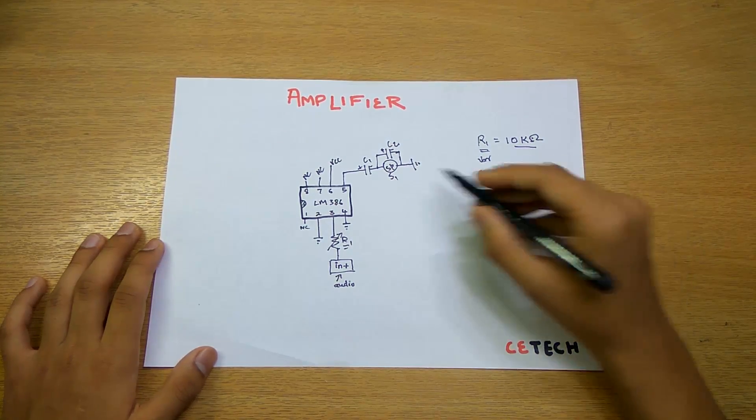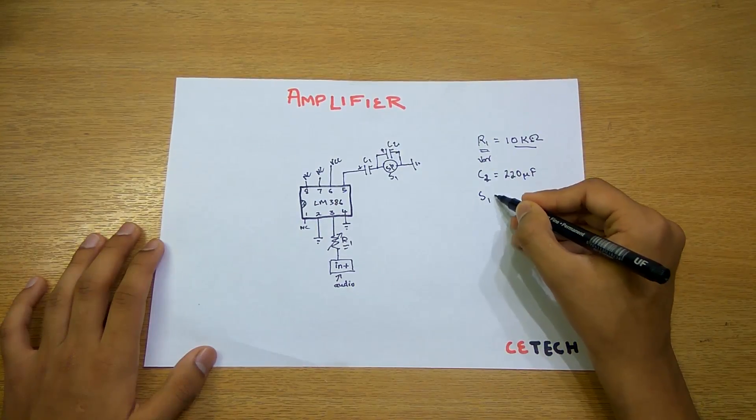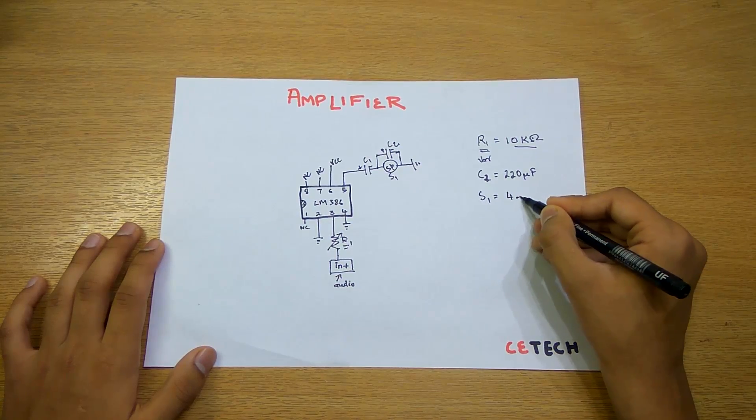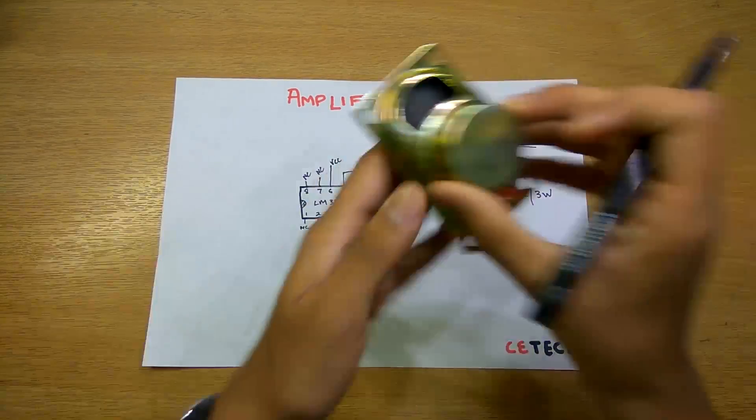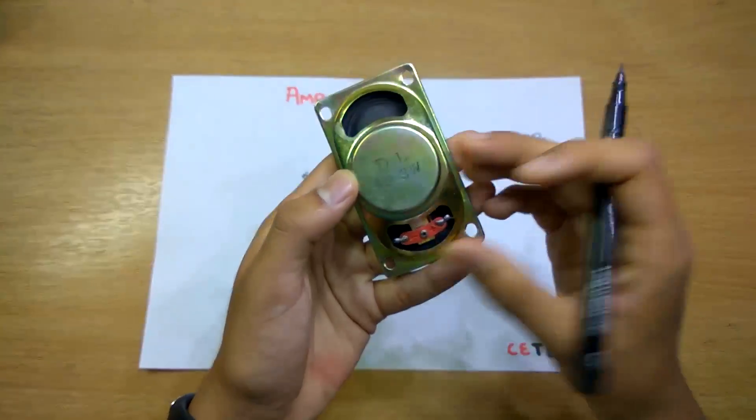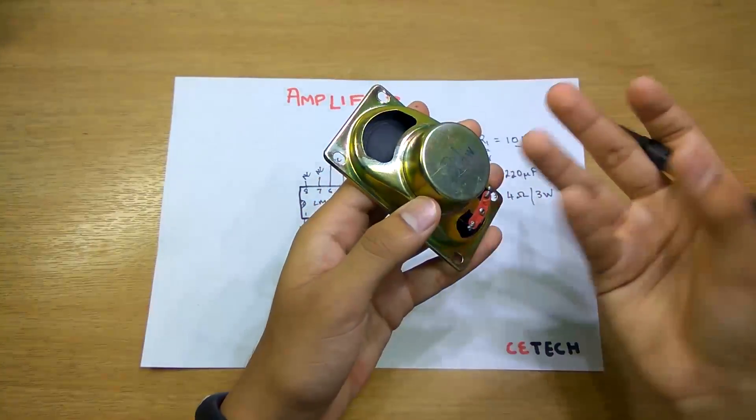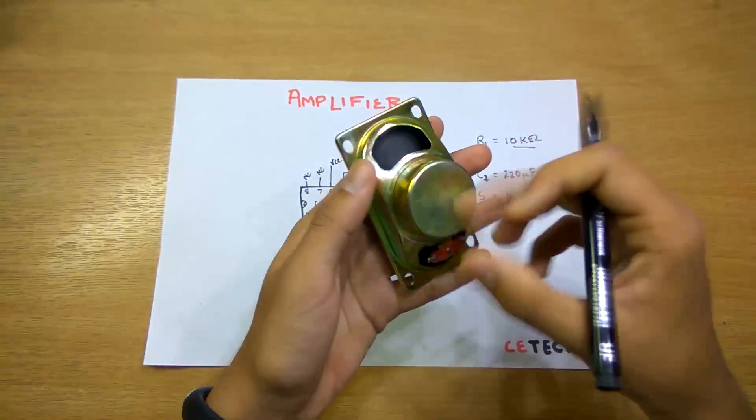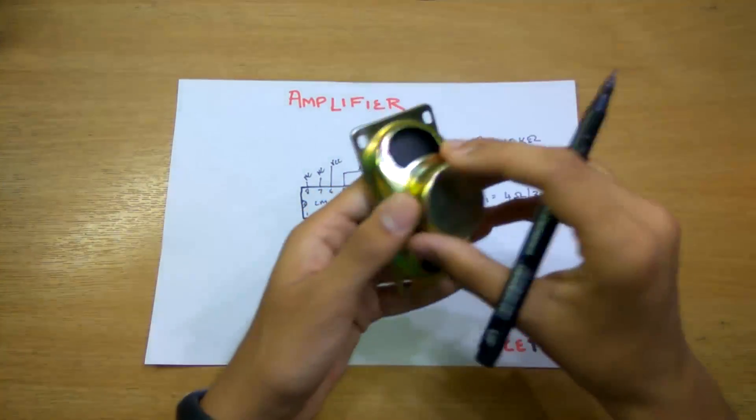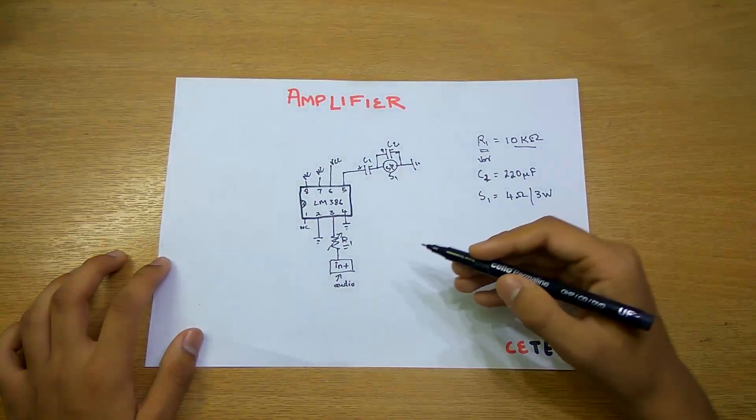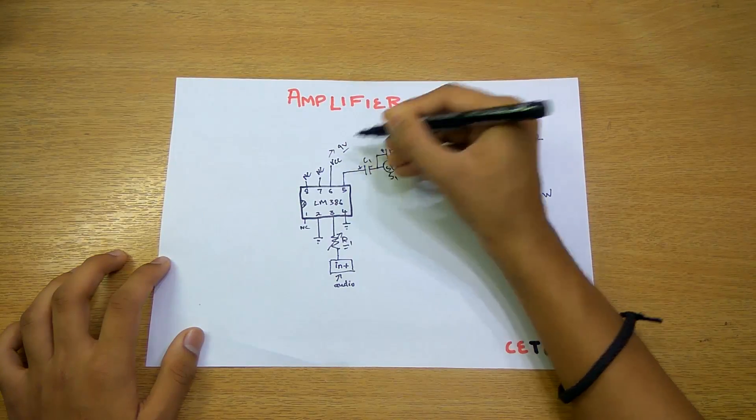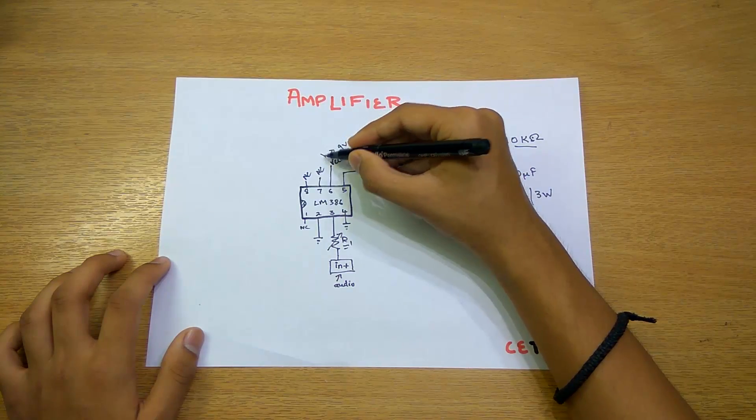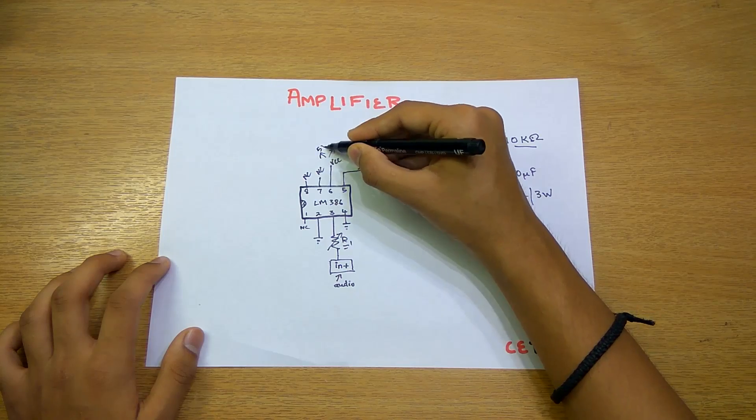Taking the value of C1, we will have this as 220 microfarad cap. Now for the S1, we will have 4 ohm 3 watt speaker. This speaker is pretty easily available in any computer scrap computer speakers. This is 4 ohm 3 watt, this works perfectly fine in this amplifier. For the battery purpose, we can use a 9 volt battery or we can use 5 volt battery. It works fine in between this range.